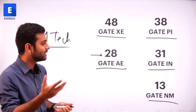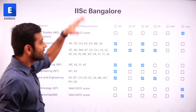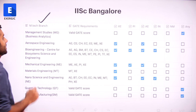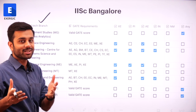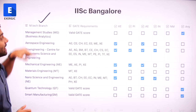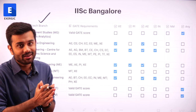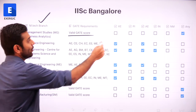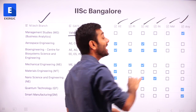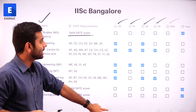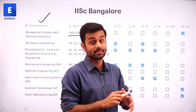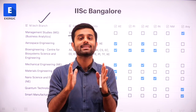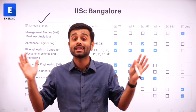Within a few minutes I will cover that. I am not going to read each and everything here. Let me explain this table — this is the M-Tech branch name. Very interestingly, the first one is Management Studies and Business Analytics, where from a valid gate score you can get admission. I have written columns for XE, PI, AE, IN, NM, and also an 'any branch' option. This is the most comprehensive detail you can find — we compiled each and everything by looking at branches and eligibilities to reach this conclusion.